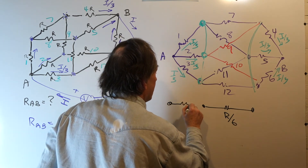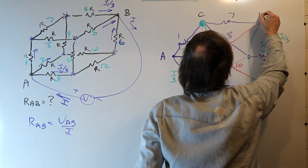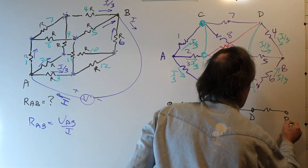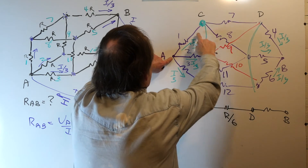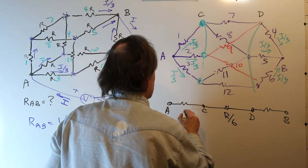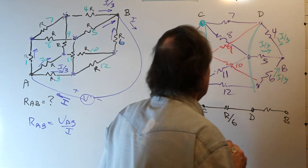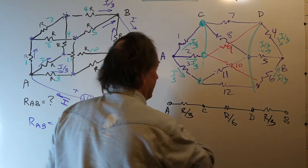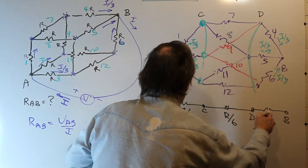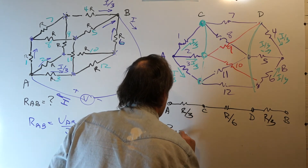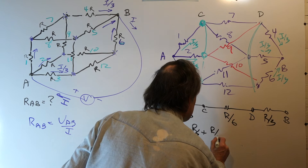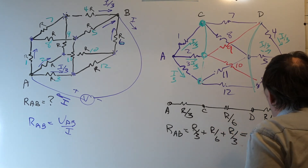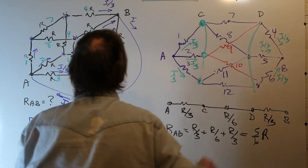Let's call the shorted node near A as node C, and the shorted node near B as node D. Between A and C we have three resistors in parallel, each of value R, so the resistance is R/3. Between D and B we also have three resistors in parallel, giving R/3. These three sections are in series, so the total resistance RAB = R/3 + R/6 + R/3 = 2/6 + 1/6 + 2/6 = 5R/6. That is the equivalent resistance between diametrically opposed nodes A and B on the cube.